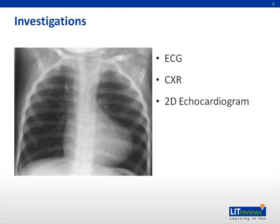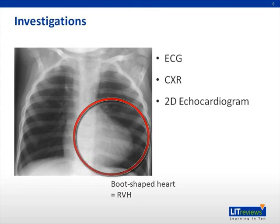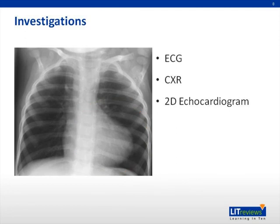Signs of TOF can be detected on ECG and chest x-ray. Right ventricular hypertrophy can lead to changes on ECG, including right axis deviation. It also shows up as a boot-shaped heart on chest x-ray, as shown here. Chest x-rays may also show decreased pulmonary vascular markings.